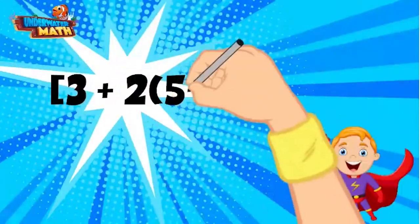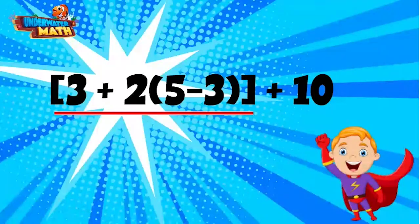Let's try another one. Again, we have parentheses within our brackets. We must solve 5 minus 3 first, which equals 2.